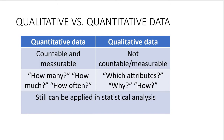Quantitative data is countable and measurable — they are always about variables which might be assigned a certain value. When it comes to age, level of income, number of children, and so on, we are discussing quantitative data.